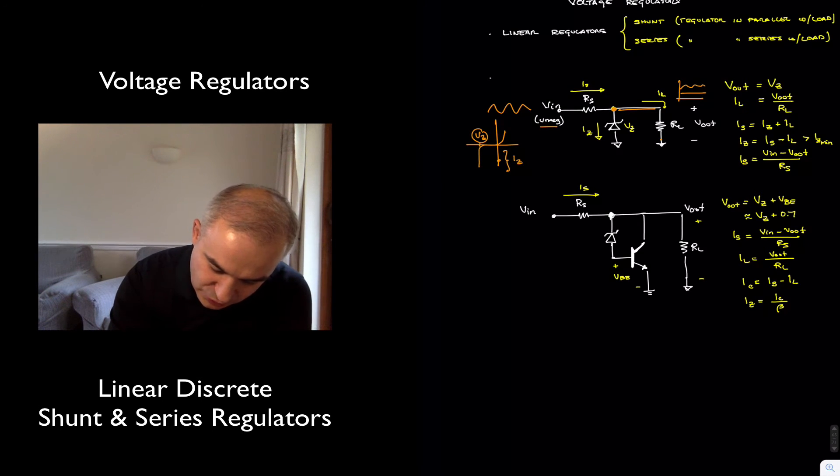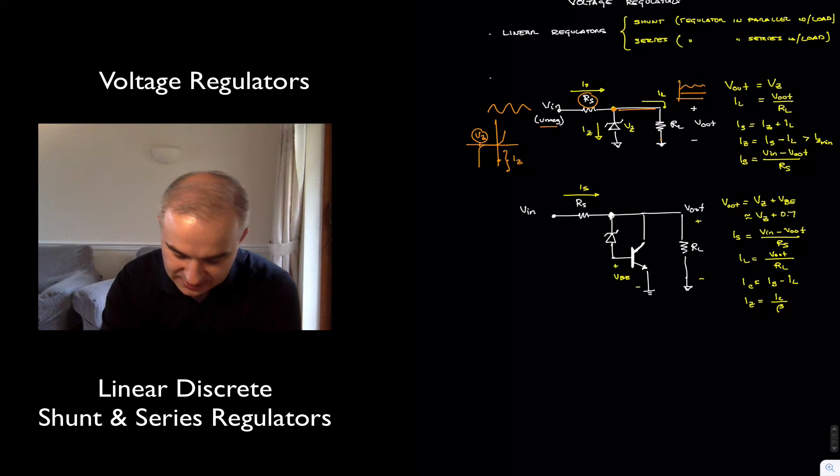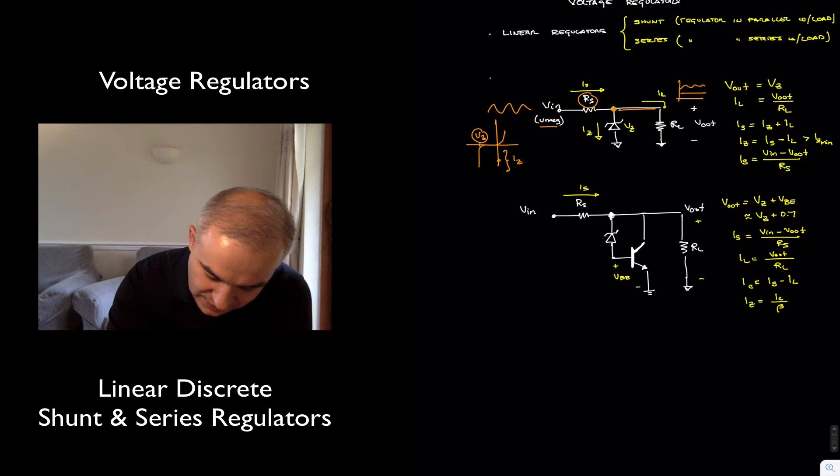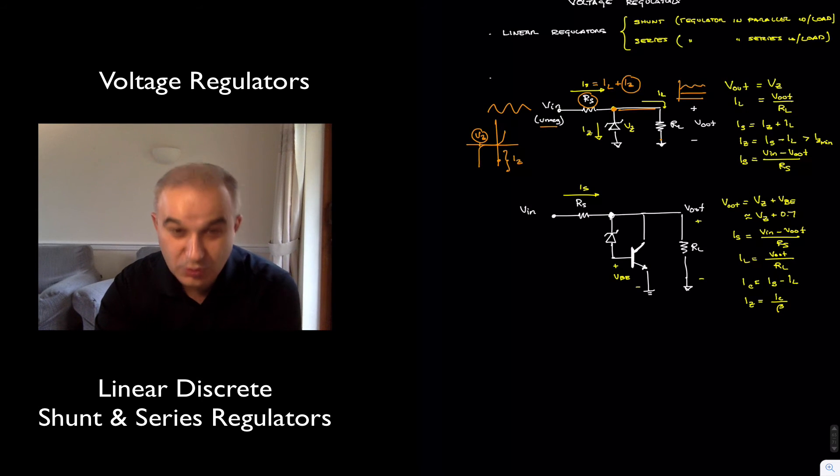And then we just need to choose the biasing resistor to make sure that we are providing IS equal to the load current plus the Zener current. So, this is going to be typically relatively small, but we need to provide a little bit of Zener current to make sure that we are reverse biasing the Zener.